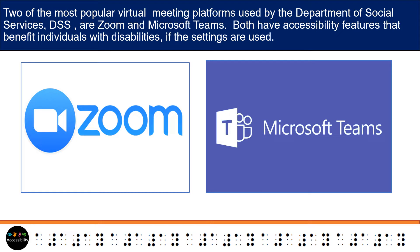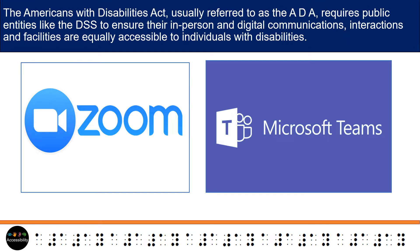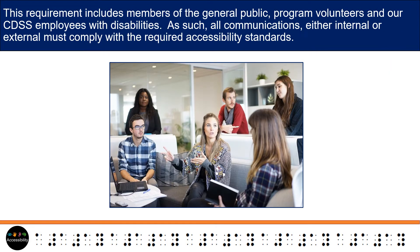The Americans with Disabilities Act, usually referred to as the ADA, requires public entities like the DSS to ensure their in-person and digital communications, interactions, and facilities are equally accessible to individuals with disabilities. This requirement includes members of the general public, program volunteers, and CDSS employees with disabilities. As such, all communications, either internal or external, must comply with the required accessibility standards.